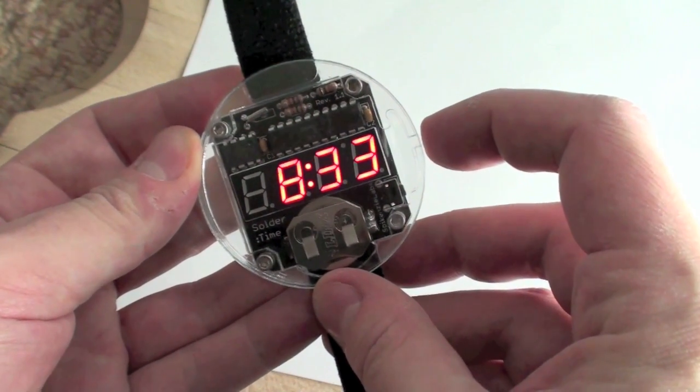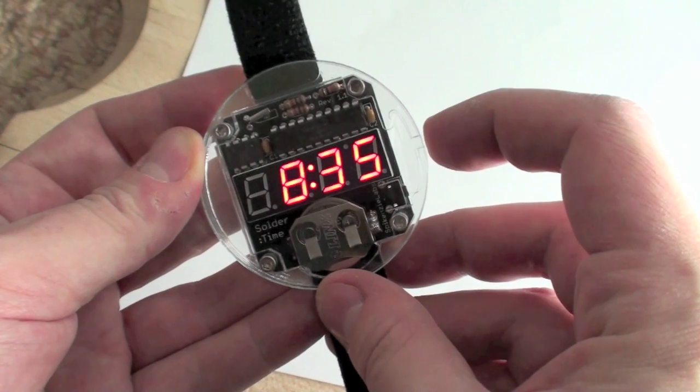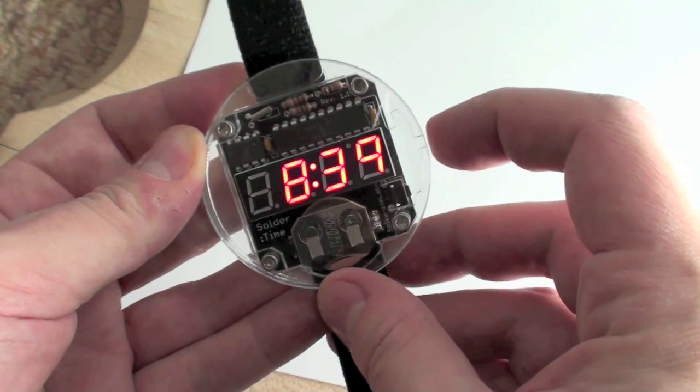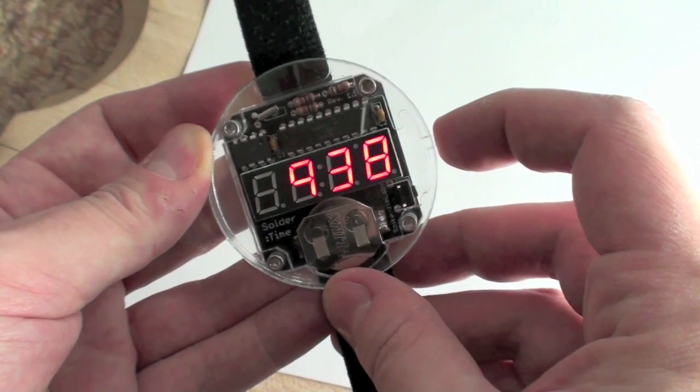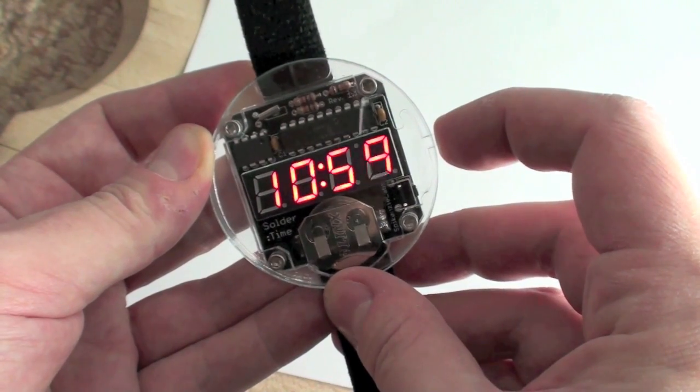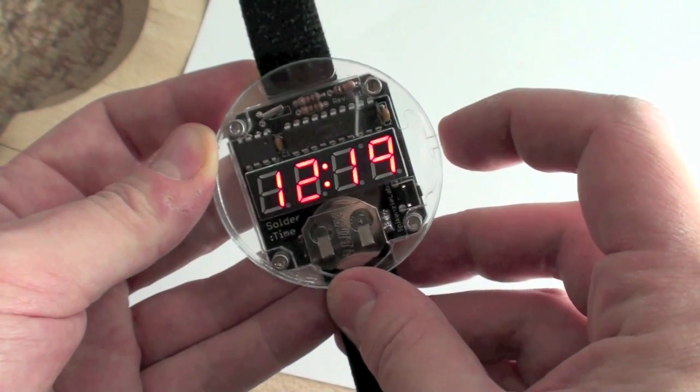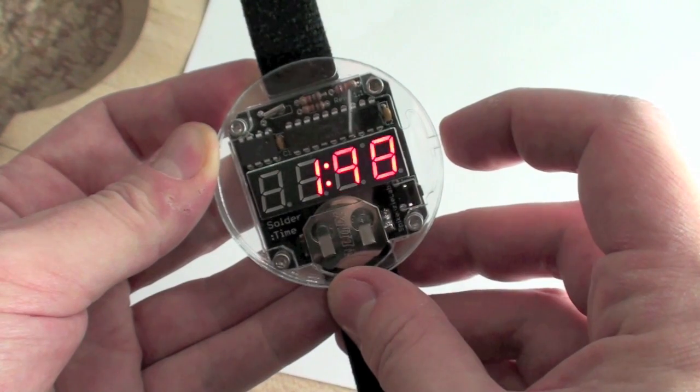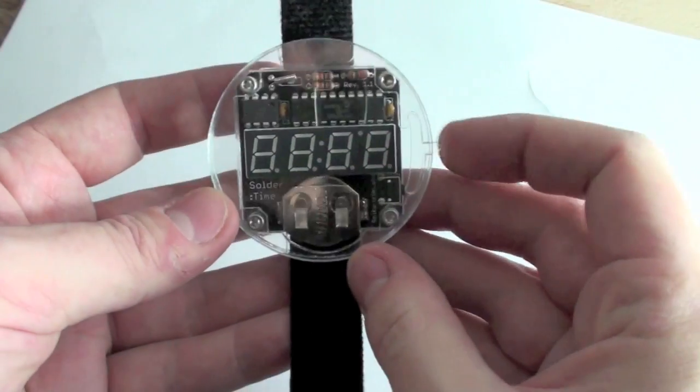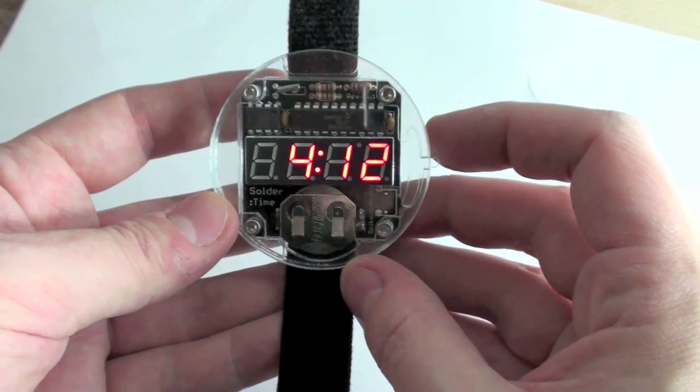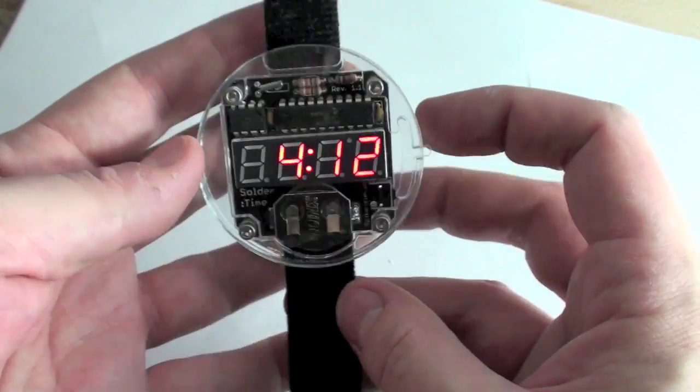To set the time, you tap the button, then tap it again. Wait for the colon to flash and it starts moving forward in time. Quicker than normal, of course. And if you hold it down, it goes really fast so you can get to the right time. But look what happens - go past 12 o'clock and it's back around to 1. So it's only a 12-hour clock. I would have preferred a 24-hour clock, I think. Apparently you can program the PIC chip, but that's well beyond my capabilities.